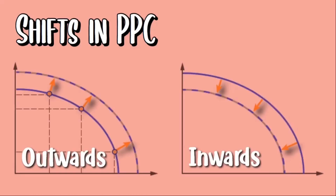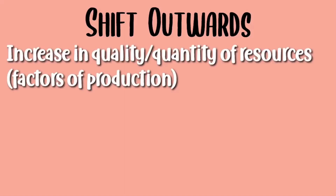Now let's look at the shifts in the production possibility curve. There are two types of shifts: outwards and inwards. The curve would shift outwards if there is an increase in the quality and quantity of resources — these are your factors of production.